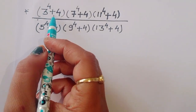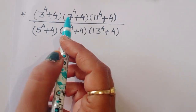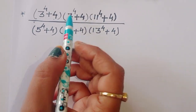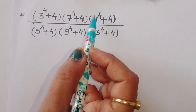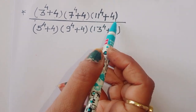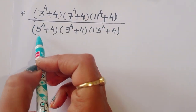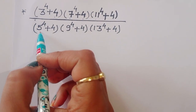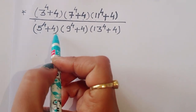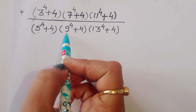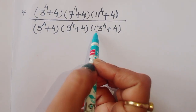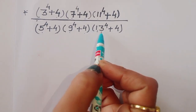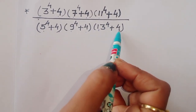The problem given is: 3 power 4 plus 4, times 7 power 4 plus 4, times 11 power 4 plus 4, divided by 5 power 4 plus 4, times 9 power 4 plus 4, times 13 power 4 plus 4.